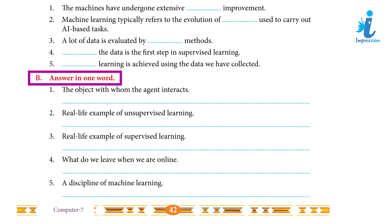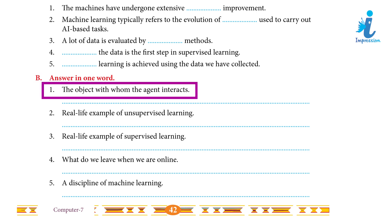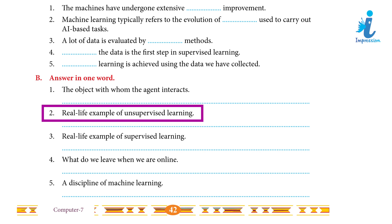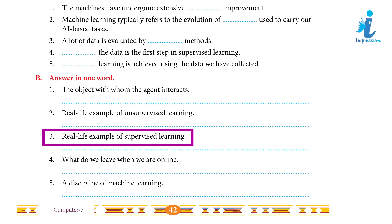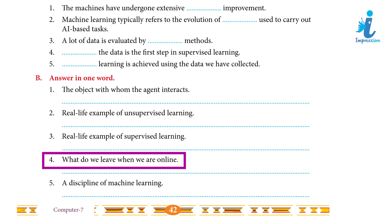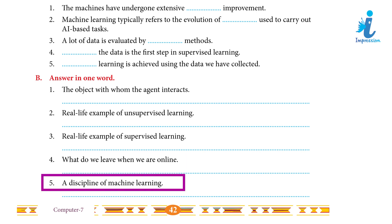Answer in one word: 1. The object with which the agent interacts. Answer: Environment. 2. Real-life example of unsupervised learning. Answer: Adaptation of an animal. 3. Real-life example of supervised learning. Answer: Pictures labeled in the computer. 4. What do we leave when we are online? Answer: Digital footprint. 5. A discipline of machine learning. Answer: Statistics.